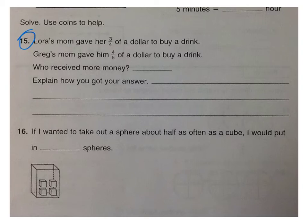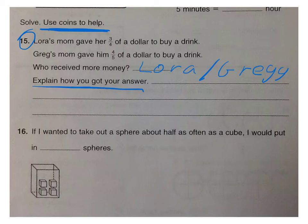Number fifteen. So use coins to help you solve. You can use the coins in the classroom. Laura's mom gave her 3 fourths of a dollar to buy a drink. Greg's mom gave him 4 fifths of a dollar to buy a drink. Who received more money? Here you're going to either write Laura or Greg. Now explain how you got that answer. Using the coins, you can try to figure out how you can divide a dollar into 4 equal parts and 5 equal parts. And that'll help you. Because Laura got 3 fourths of a dollar and Greg got 4 fifths of a dollar.